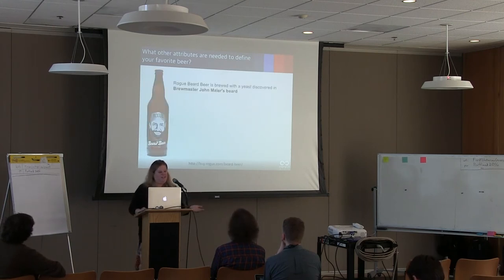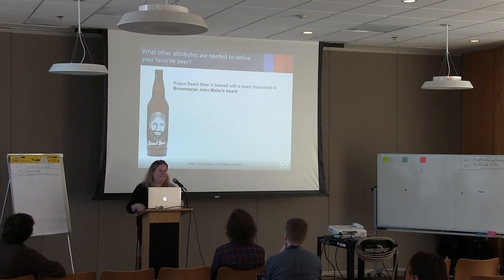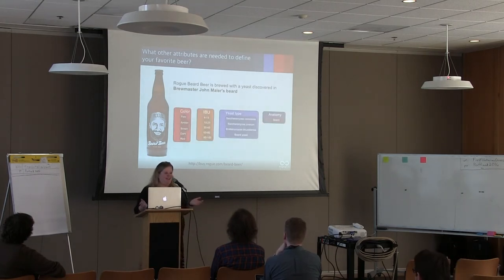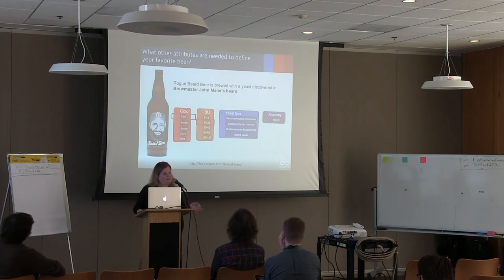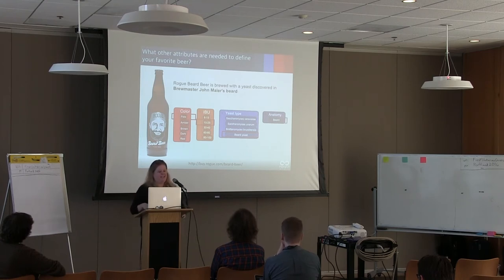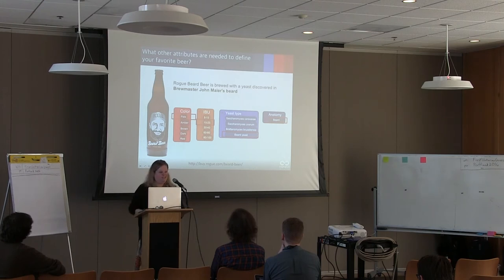What if we needed to add some other attributes to define our beers? Beers aren't only defined by color and yeast. Especially if you're drinking the Beard Beer, which is brewed by Rogue Brewery here in Oregon, and actually contains yeast found in the brewmaster's beard. In the Beard Beer, we had to classify this beer by color — which is a pale ale — it has IBUs of 15 to 25, it's brewed from beard yeast, and it contains an anatomical feature which you may not normally think to include in your beer. If you want to try the Beard Beer, it's available at a pub just down the street.